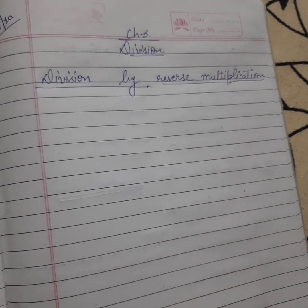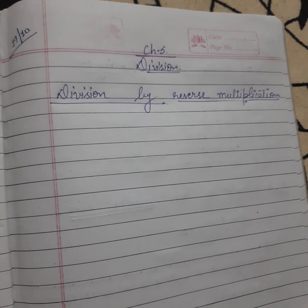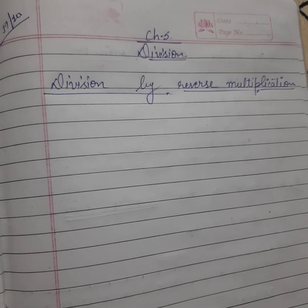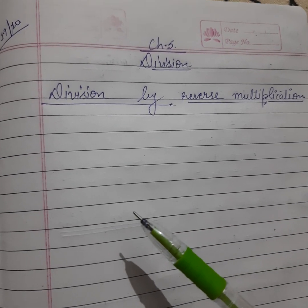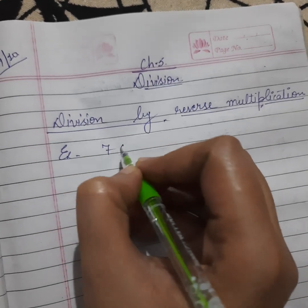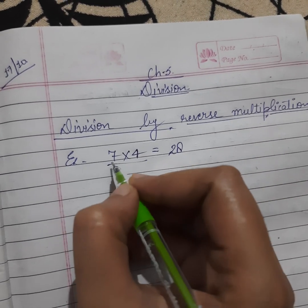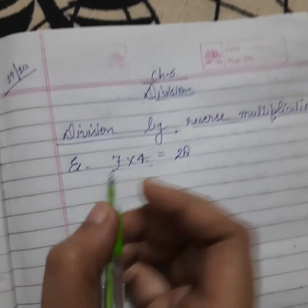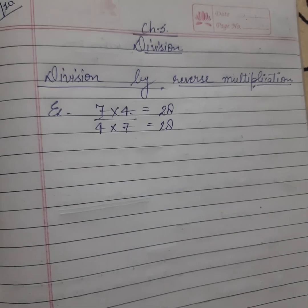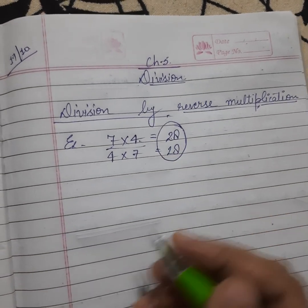Hello students, today we will learn division by reverse multiplication. What is reverse multiplication? We know very well that if we know the multiplication table, then division is very simple. For example, seven fours are twenty-eight — we know this multiplication. And four sevens are twenty-eight — it is also the same.